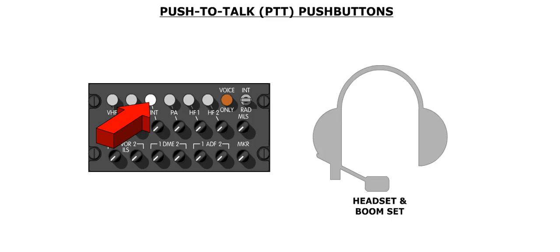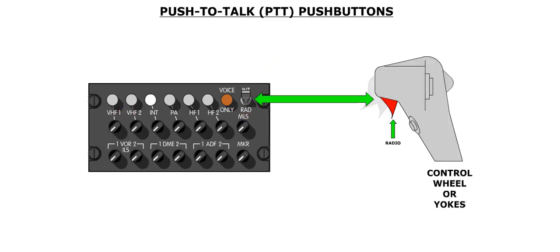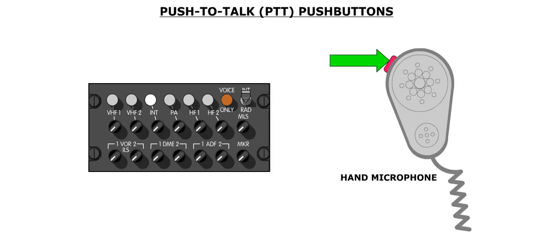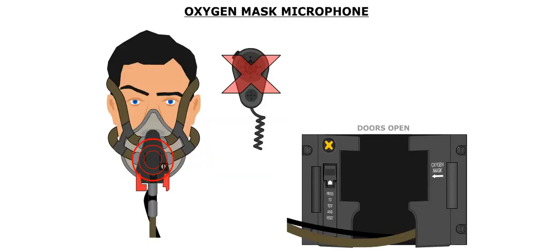Once a communication mode has been selected, transmissions are made through the boom microphone. One of the following methods is used to transmit through the selected mode: place the INT/RAD switch on the ACP to the RAD position, or squeeze the push-to-talk selector on the outboard side of each control wheel. The hand microphone incorporates a push-to-talk button as well. The captain also has a push-to-talk switch on the nose wheel steering hand wheel. There is also a microphone built into the oxygen mask. When the mask is pulled out of its receptacle, the active microphone is automatically transferred from the boom microphone to the oxygen mask microphone. Transmissions are made through the oxygen mask microphone using one of the methods described previously.